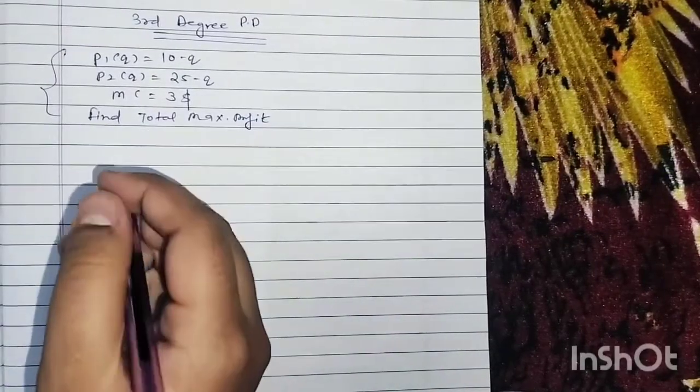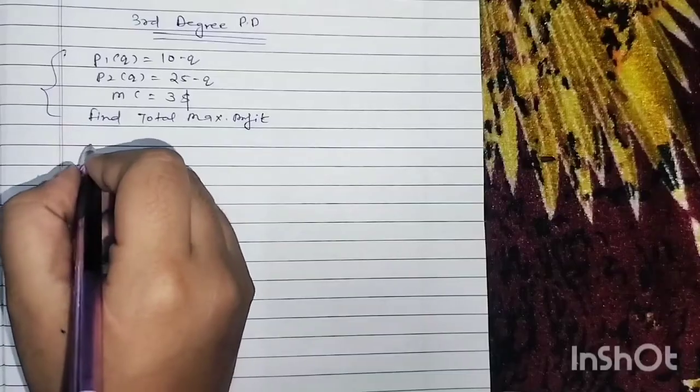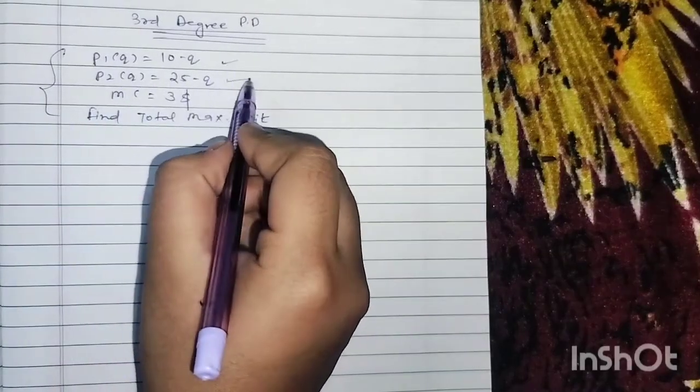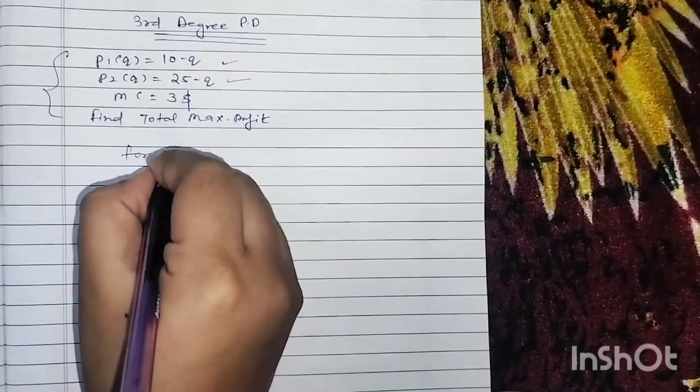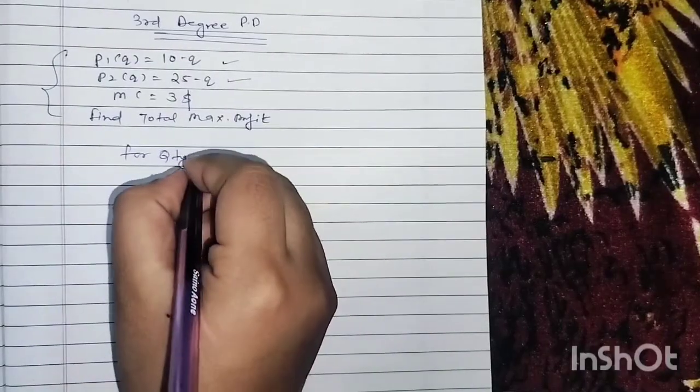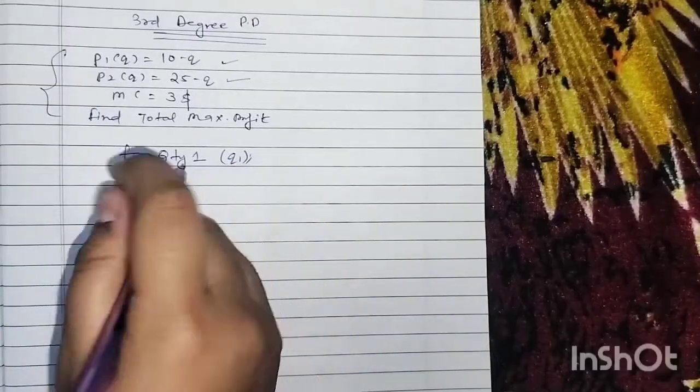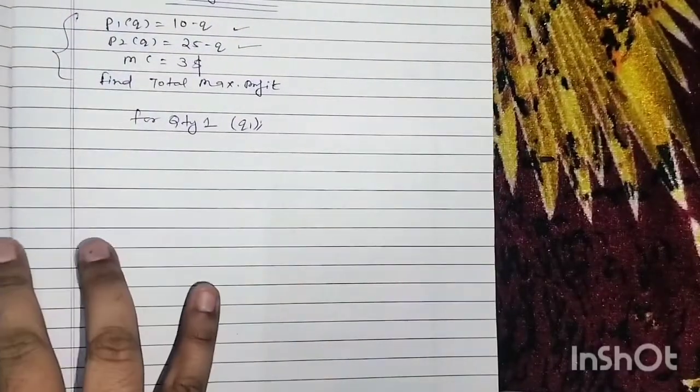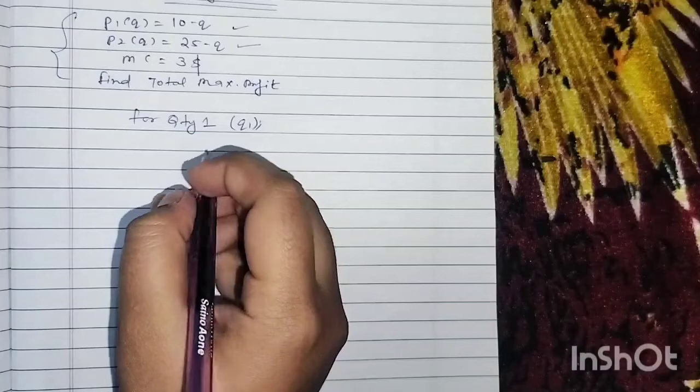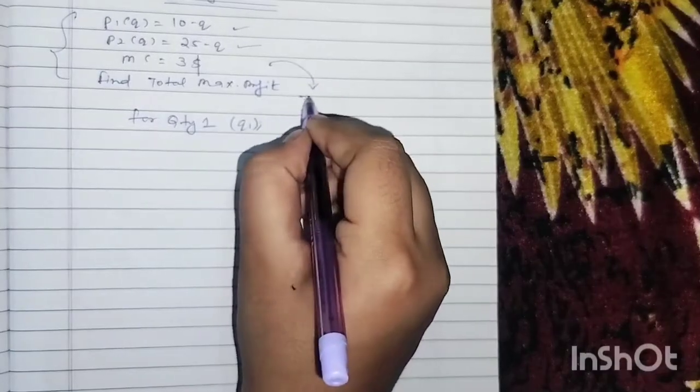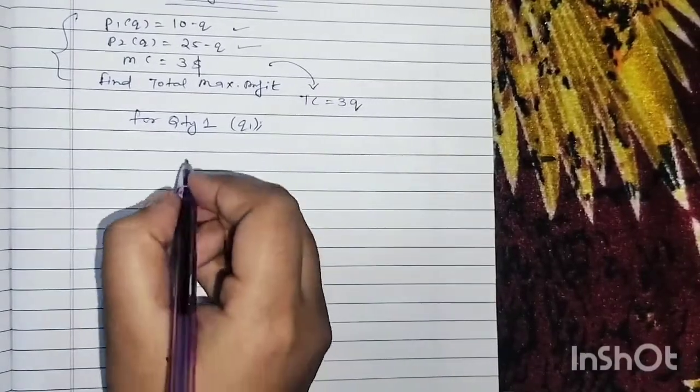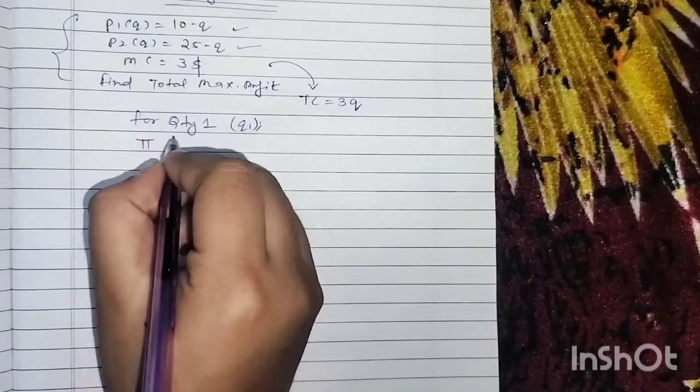For this, you have to take Q1 and Q2 separately. So for quantity 1 (Q1), you have to set up the profit function individually here. The total cost function will be 3Q, so your profit function π1, which is for quantity 1, is TR1 minus TC1.